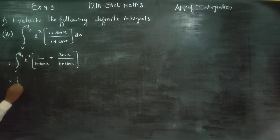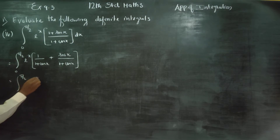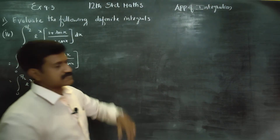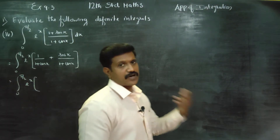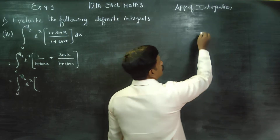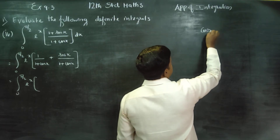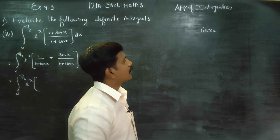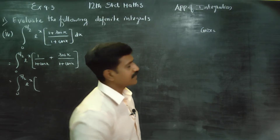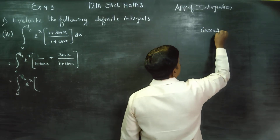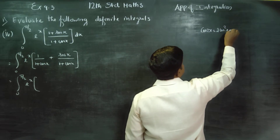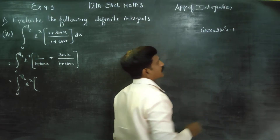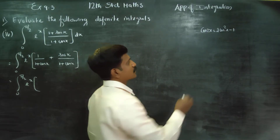Then, integration from 0 to π/2 of e^x. Let's recall some 11th standard formulae. What is cos 2x? Double angle formula: cos 2x is equal to 2cos²x minus 1.